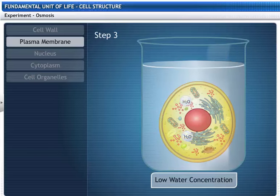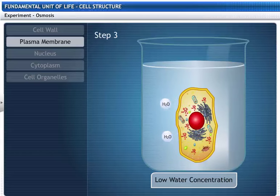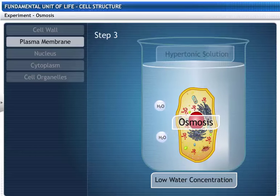If the medium has a lower concentration of water than the cell, the cell loses water by osmosis and then shrinks. Such a solution is known as hypertonic solution.